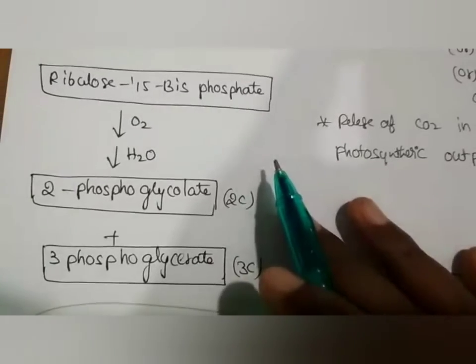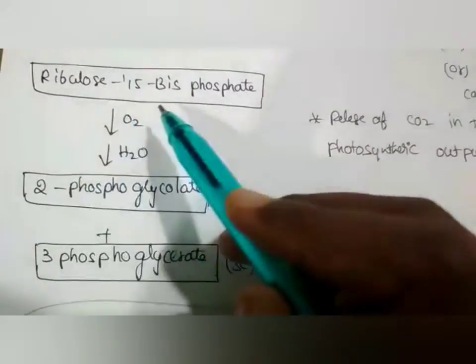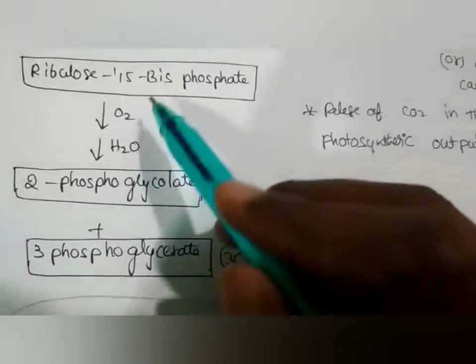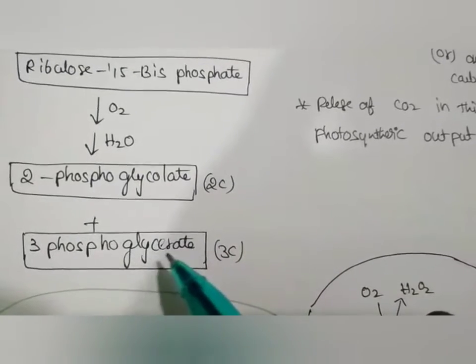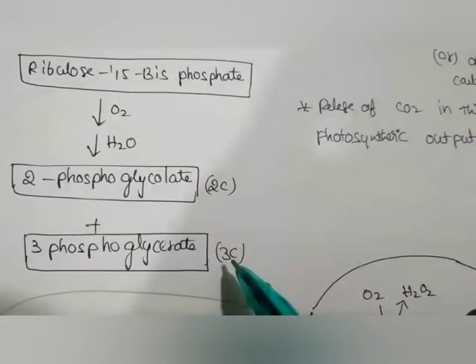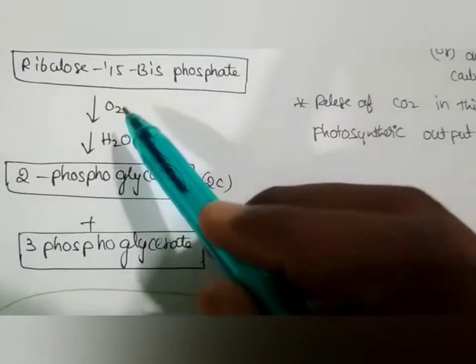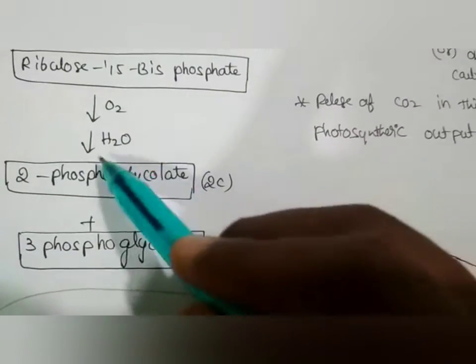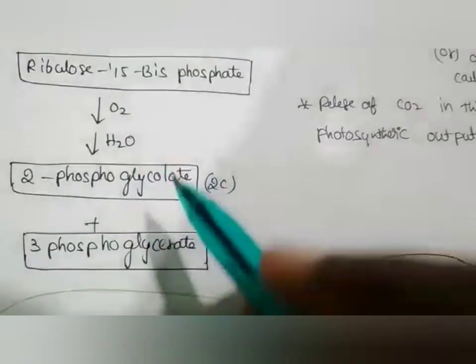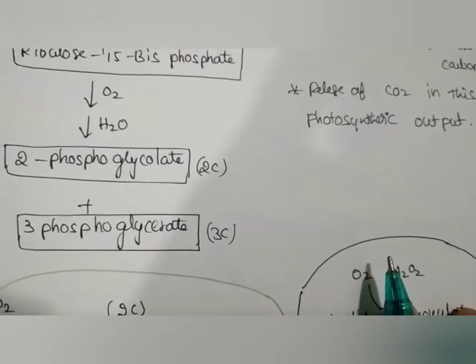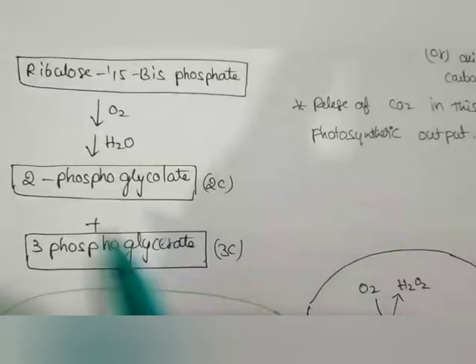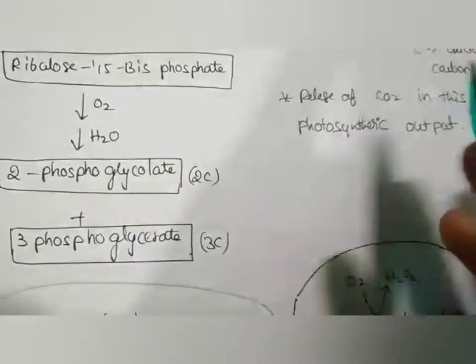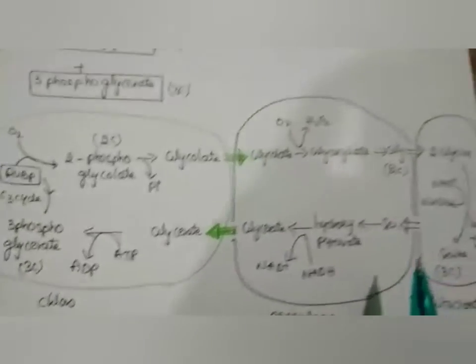The first main reaction is: ribulose-1,5-bisphosphate, which is a five-carbon compound, is converted into two phosphoglycolate, a two-carbon compound, and three phosphoglycerate, a three-carbon compound, by the oxygenase activity of rubisco. H2O enters into this reaction. Finally, we get two phosphoglycolate, which enters into the glycolate pathway. The three organelles are present here.